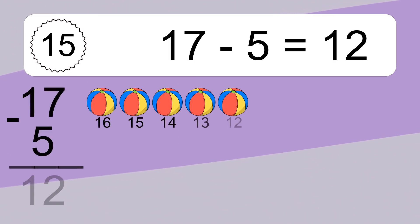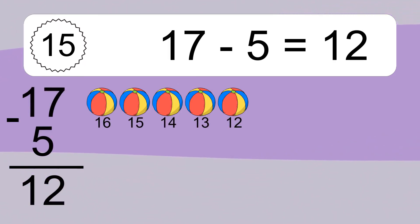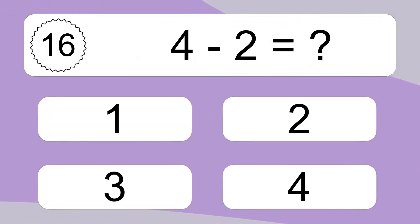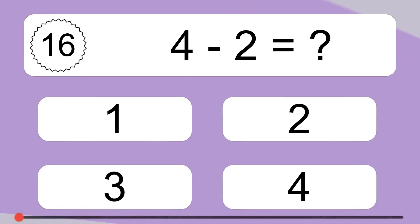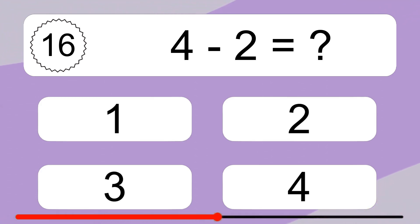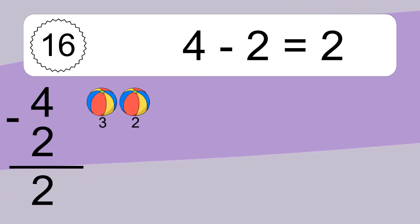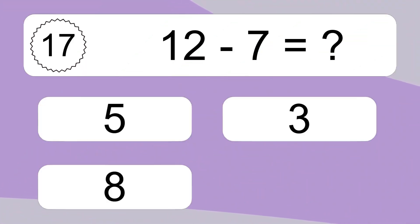17 minus 5 equals what? 17 minus 5 equals 12. Let's count it: 16, 15, 14, 13, 12. 4 minus 2 equals what? 4 minus 2 equals 2. Let's count it: 3, 2.